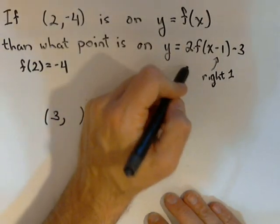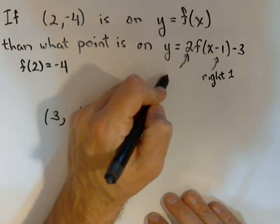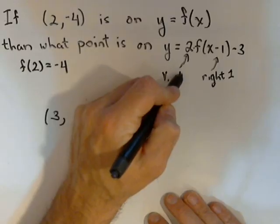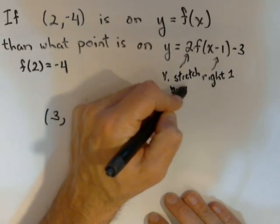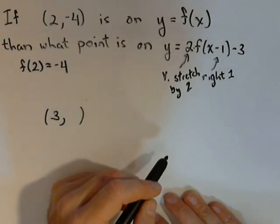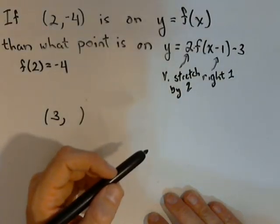What that's going to do is a vertical stretch by a factor of 2. That's going to double all our y-values.